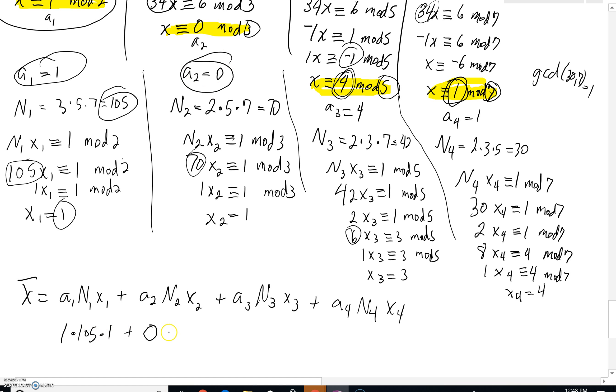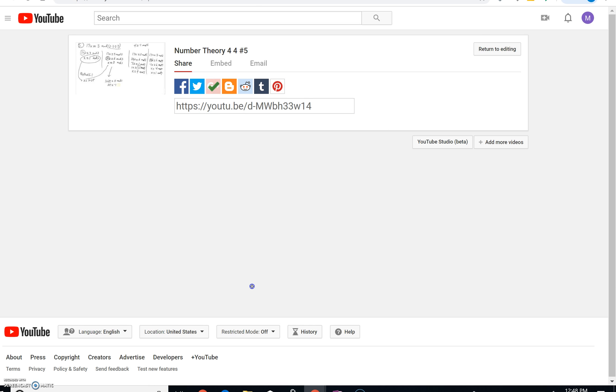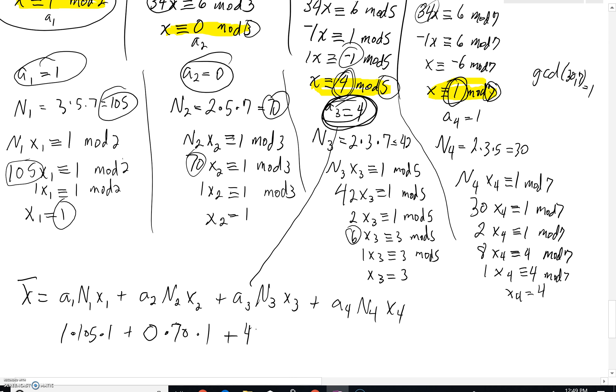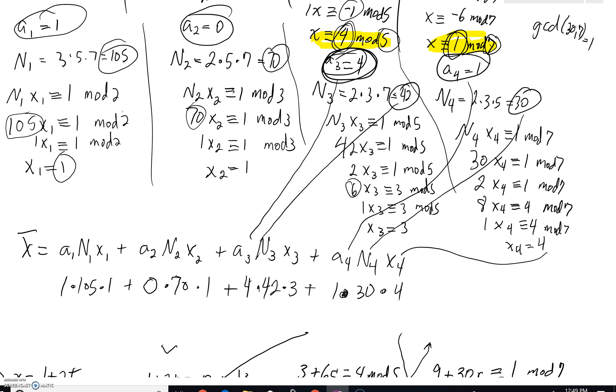Look over here. a sub 2. That's beautiful. That's 0. That's going to make our lives easy. n sub 2, of course, is a 70. And x sub 2 is a 1. It, frankly, doesn't matter. With a sub 2 being 0, that's gone. a sub 3, look in your third column here. That's right here. a sub 3 is just a 4. And n sub 3, we saw, was 42. And x sub 3 was actually a 3. Look at that. Finally, a sub 4. That's right here. a sub 4 is a 1. What's n sub 4? n sub 4 is a 30. And x sub 4 is right here. That's a 4.